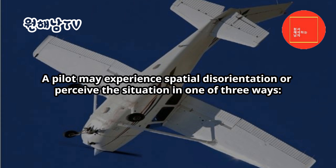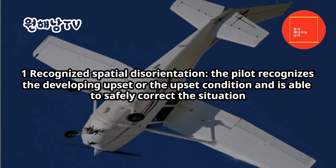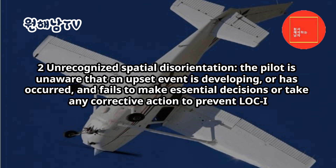Many airplane upsets occur while the pilot is engaged in some task that takes attention away from the flight instruments or outside references. Others perceive a conflict between bodily senses and the flight instruments, and allow the airplane to divert from the desired flight path. A pilot may experience spatial disorientation in one of three ways: 1. Recognized spatial disorientation — the pilot recognizes the developing upset and is able to safely correct the situation. 2. Unrecognized spatial disorientation — the pilot is unaware that an upset event is developing and fails to take corrective action to prevent LOC-I.